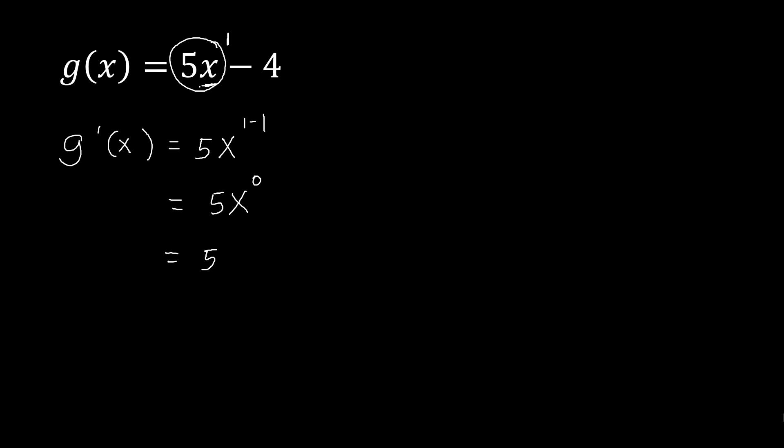Now the derivative of 4 — it's a constant, so that's 0. We always disregard the constant or cancel it out, because that will give a derivative equivalent to 0.